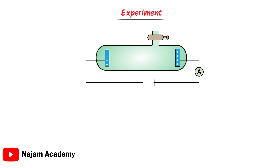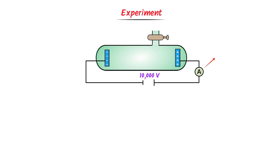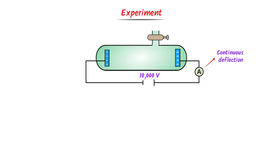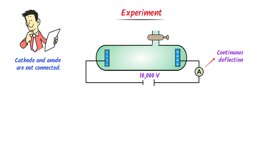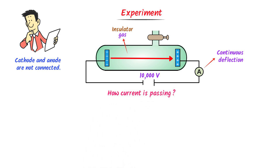Now we will learn the experiment part. Consider this discharge tube which has hydrogen gas at low pressure. When we provide high voltage to it, we will see the continuous deflection of the ammeter. Now here you have to think like a scientist. The cathode and anode are not connected — there is gas between them. We know that gas is an insulator and current doesn't pass through an insulator. But we observe continuous deflection of the ammeter, which reveals that current is continuously flowing in the circuit. How is current passing through the glass tube?